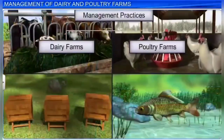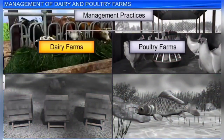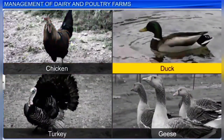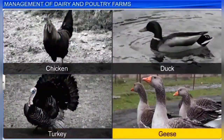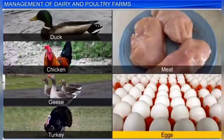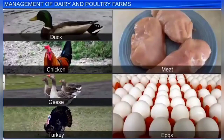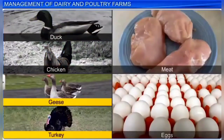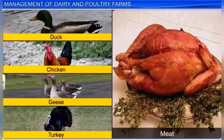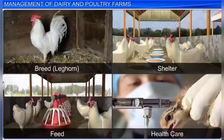Just as dairy farms rear milk-yielding animals, poultry farms manage domestic fowls or birds such as chicken, duck, turkey, and geese, reared for their meat and eggs. Poultry refers to the meat of these birds. Poultry farms employ similar management practices to dairy farming, including proper breed selection, shelter, feed, and healthcare.